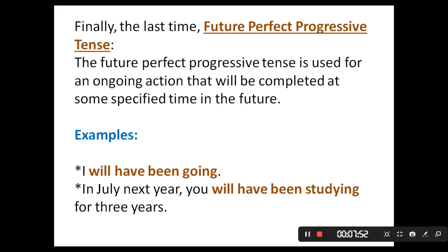Examples: 'I will have been going.' 'In July next year, you will have been studying for three years.' Be careful with the form: will + have + been + the verb with -ing. Please note it is 'been' — the verb — and we add -ing, making it the present participle. Any verb ending in -ing is a present participle verb.